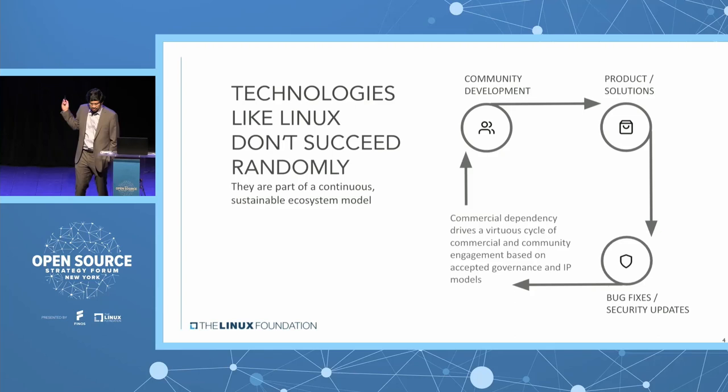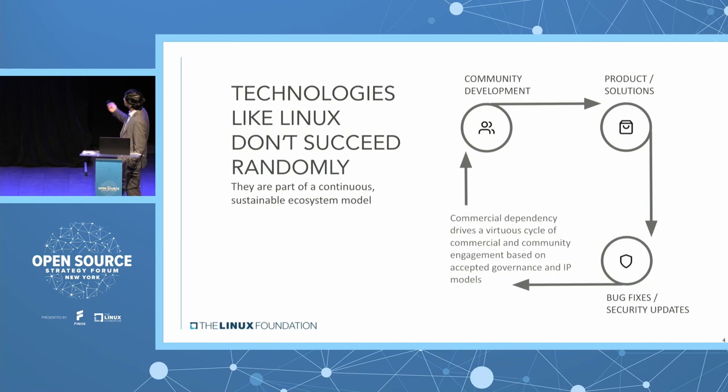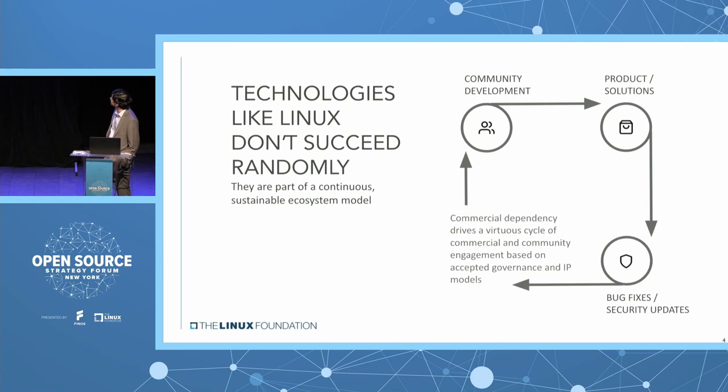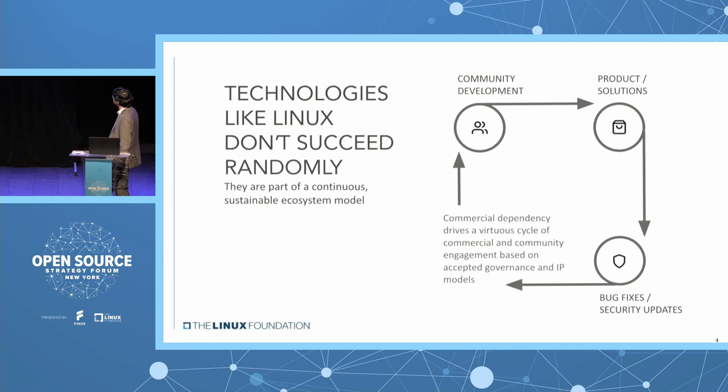Projects like the Linux kernel — it takes more than just throwing the source code out there. You need to build a sustainable ecosystem around it. You build a community of developers that can contribute to the project. You have products and solutions that are built on it. You can see around here some of the companies working on Phenos-based projects. And then you continually improve on that code base with bug fixes and security updates.